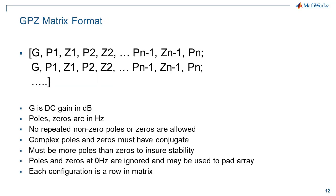The GPZ matrix has one row per configuration. The gain is the gain in dB. The poles and zeros are in hertz. Complex poles and zeros must have conjugates. For stability, there must be more poles than zeros. If necessary, the rows can be padded with zero-hertz poles and zeros to make all rows the same length.